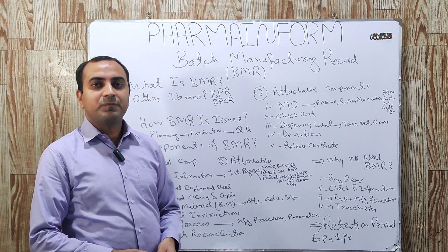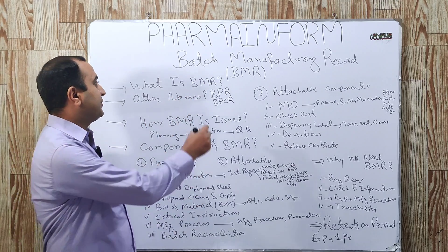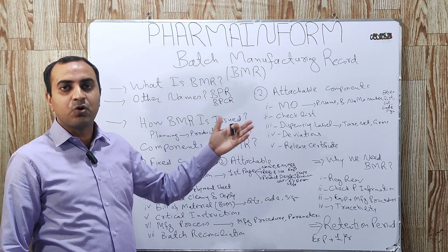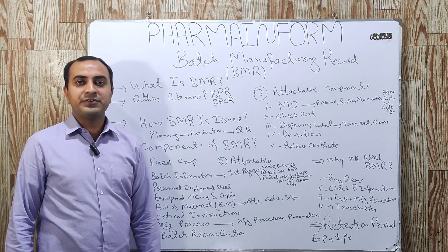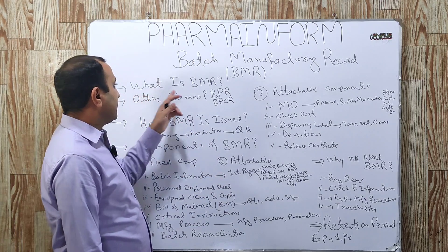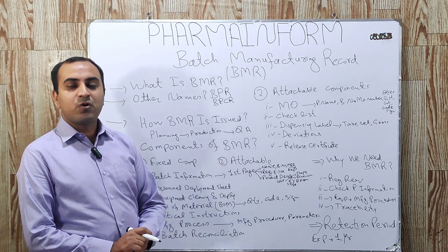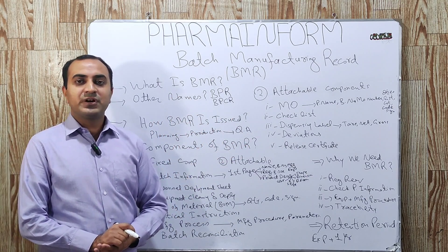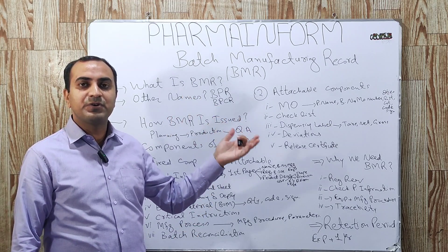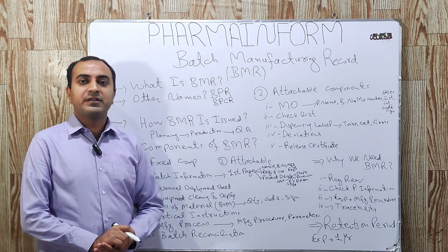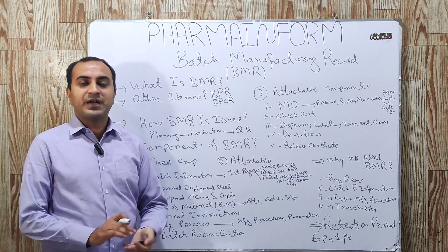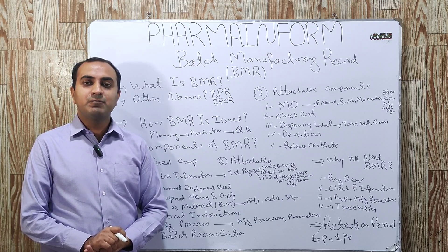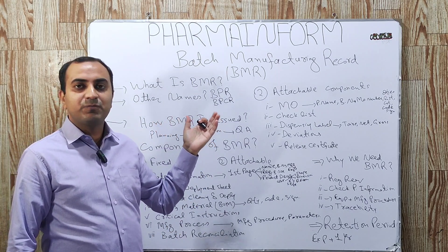BMR is basically an abbreviation — B stands for Batch, M stands for Manufacturing, and R stands for Record. Batch manufacturing record is BMR. BMR is a very important document in pharmaceutical industries, used to manufacture any batch. This document contains all the information regarding the equipment, standard manufacturing procedures, and the parameters at which we will manufacture the batch.